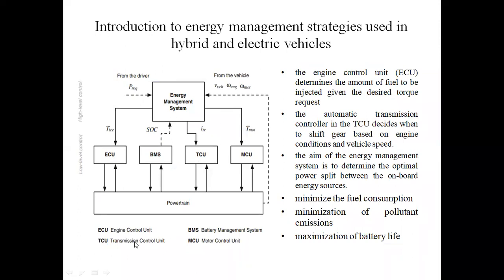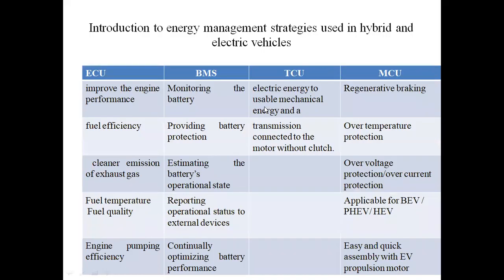The TCU is the Transmission Control Unit. It is connected between the mechanical load, mechanical transmission, and electrical motor. It controls motor output and transmission. The TCU converts electrical energy to usable mechanical energy. The transmission is connected to the motor without a clutch. The automatic transmission controller in the TCU decides when gear shifting is required based on engine conditions and vehicle speed.